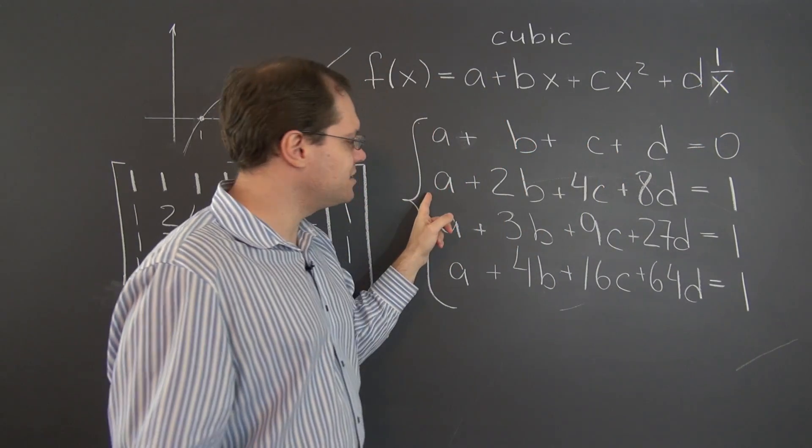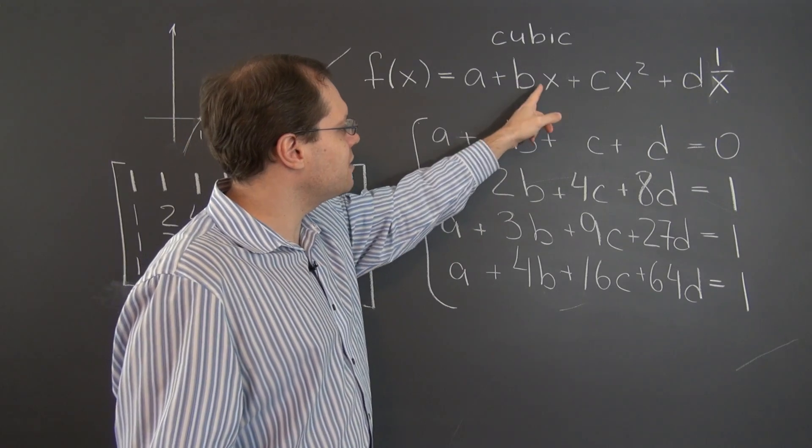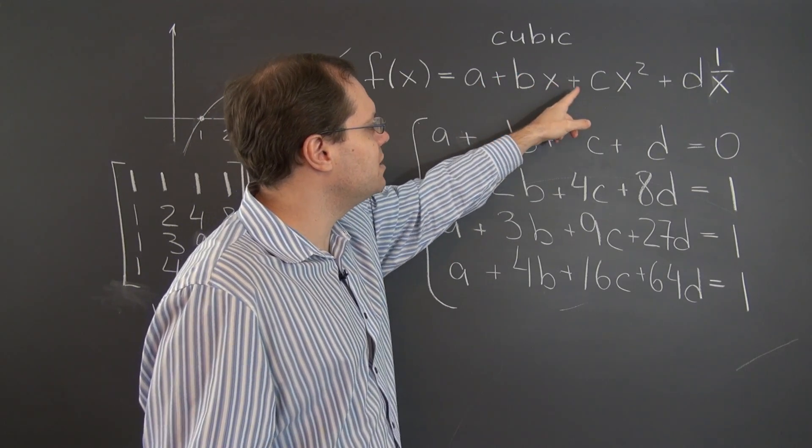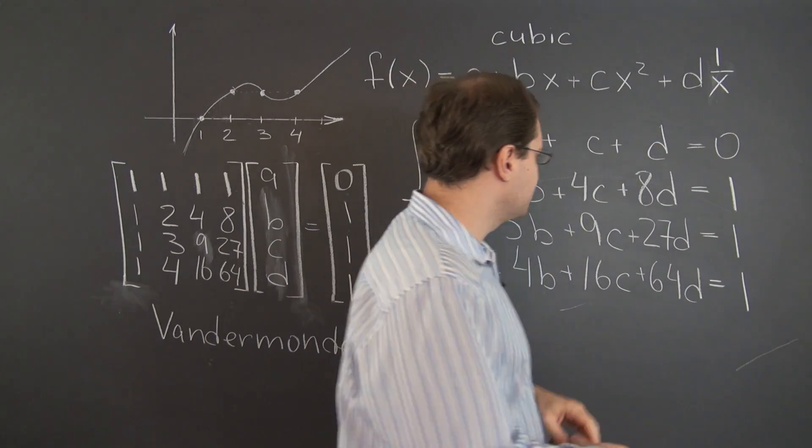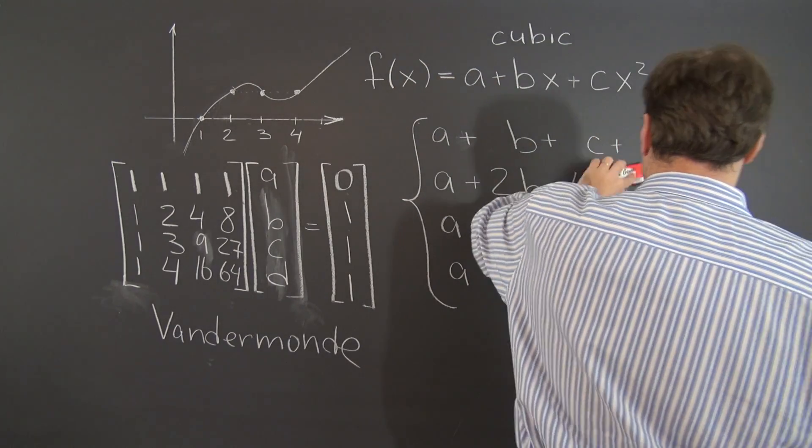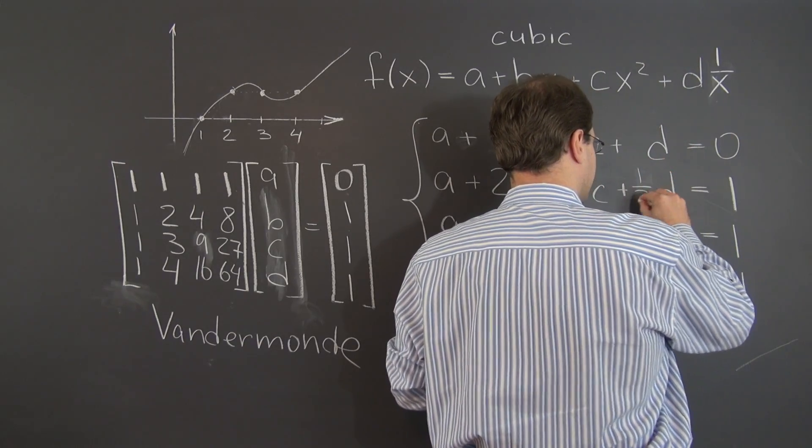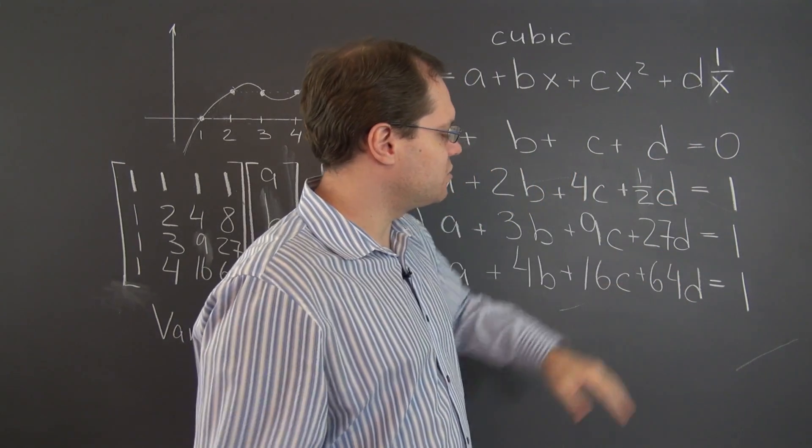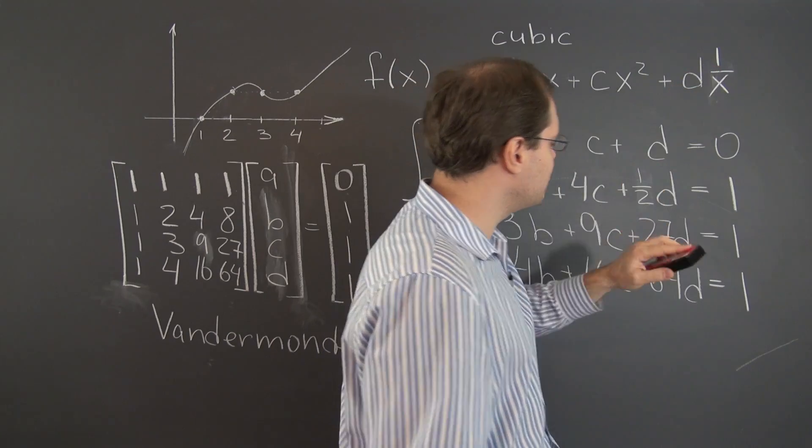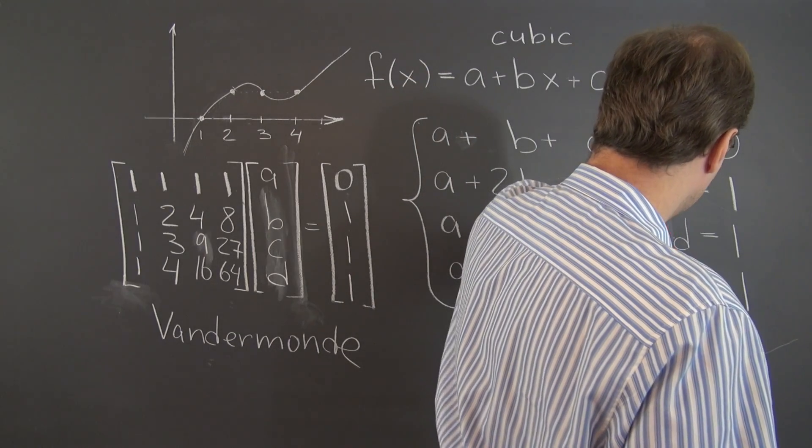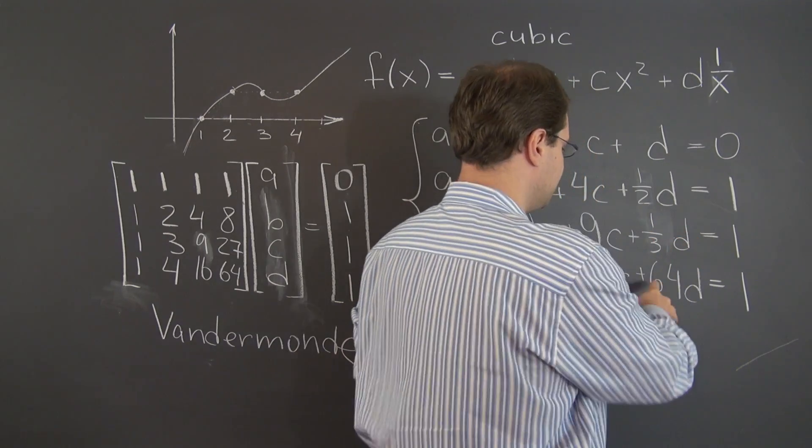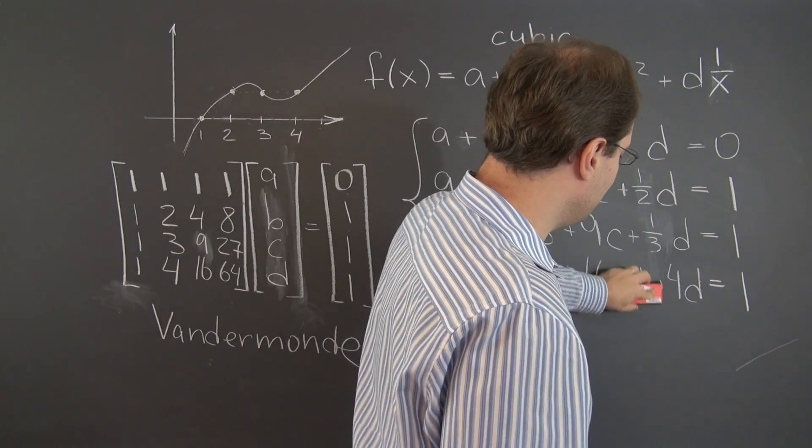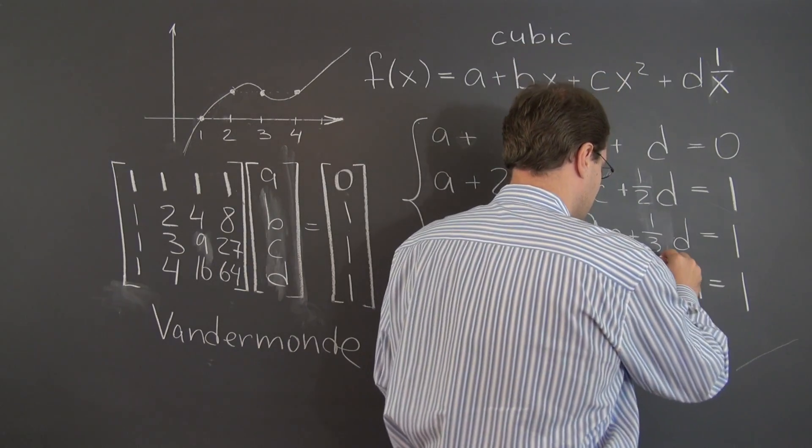But in the case of x equals 2, it'll be a plus 2b plus 4c plus 1 over 2d. So instead of 8, we'll now have 1 half. And here, instead of 27, plugging in 3, we'll have 1 third. And instead of 64, we'll have 1 over 4.